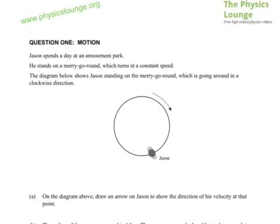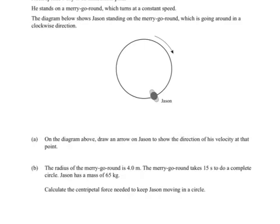Part A says on the diagram above draw an arrow on Jason to show the direction of his velocity at that point. It's going to be at a tangent to the radial direction from there, so it's going to be at right angles to that radial position.